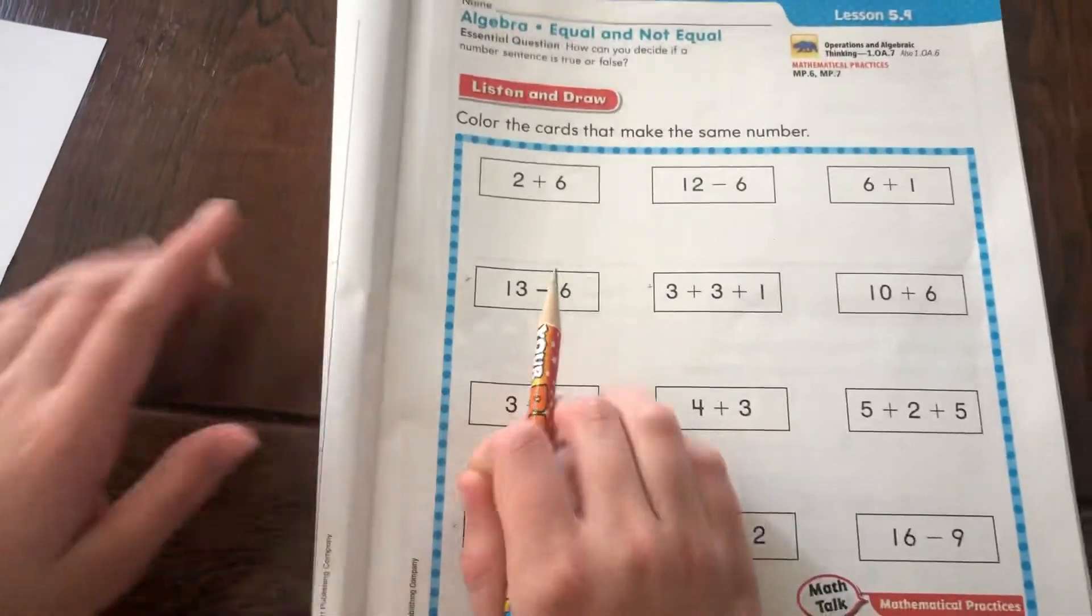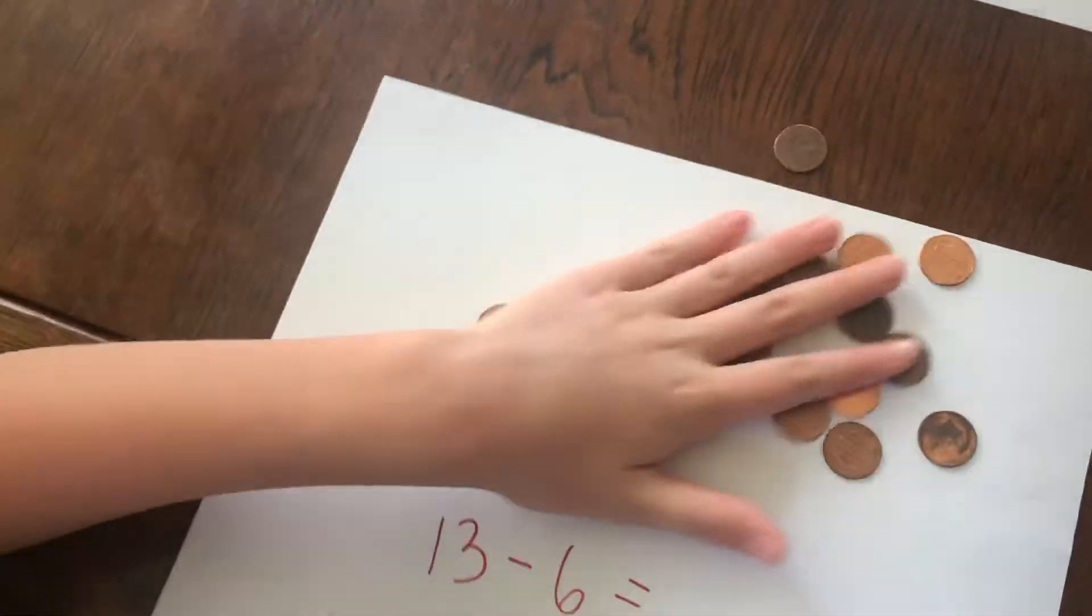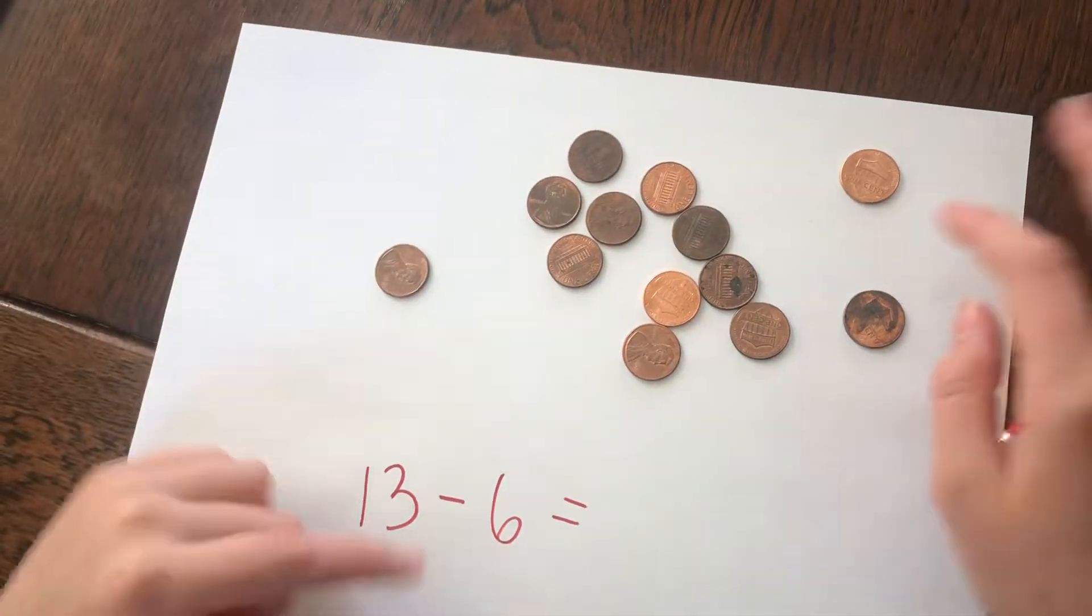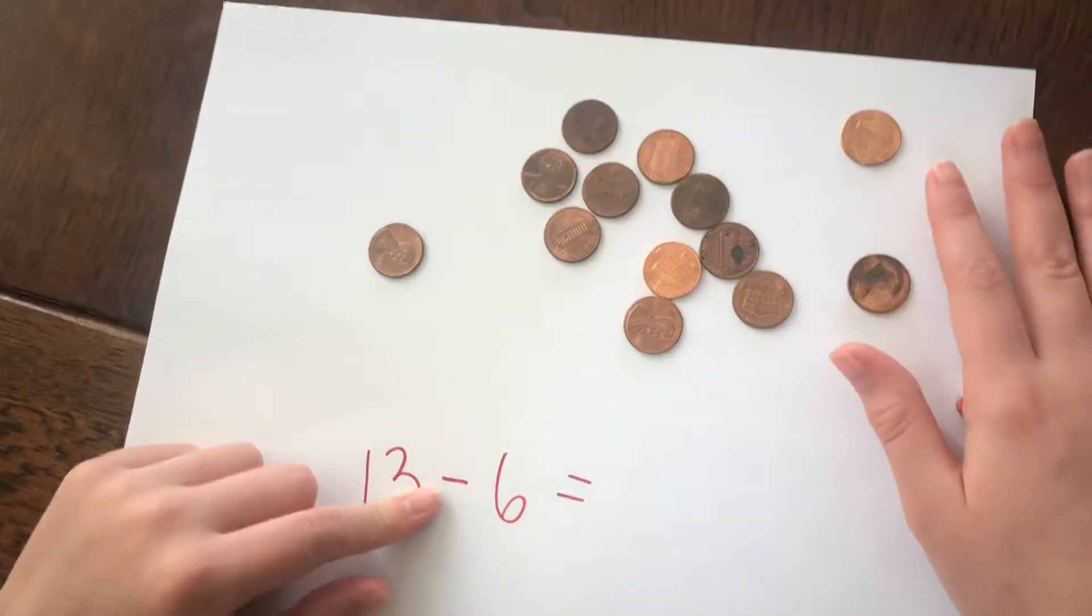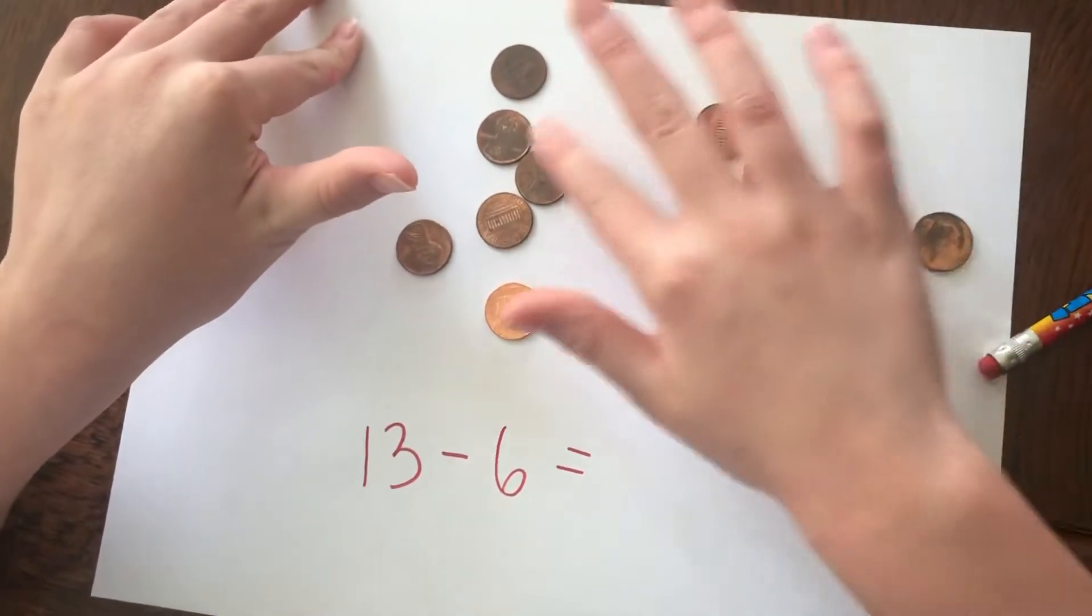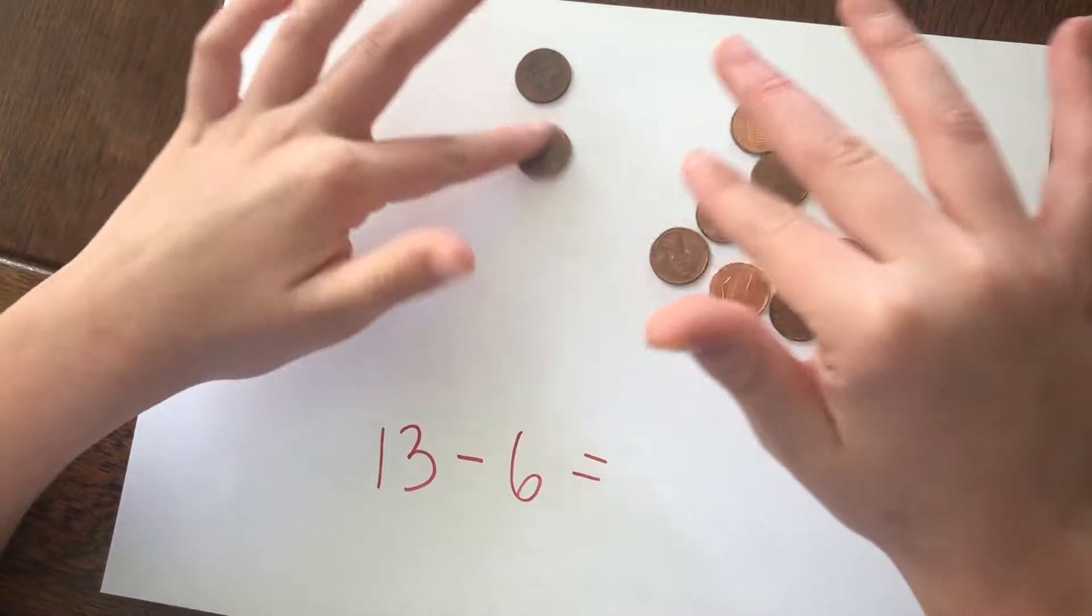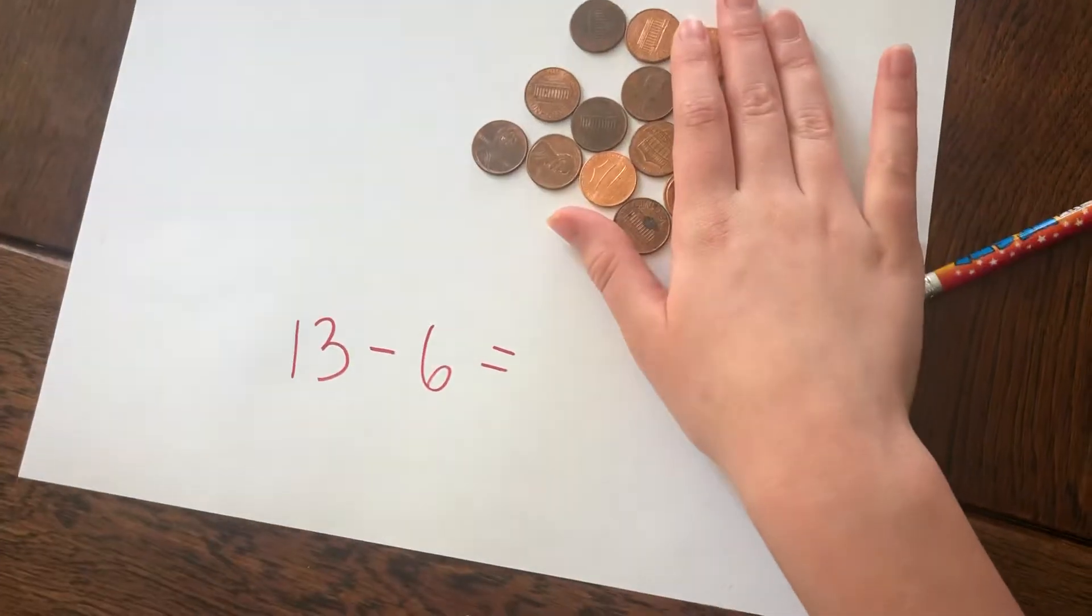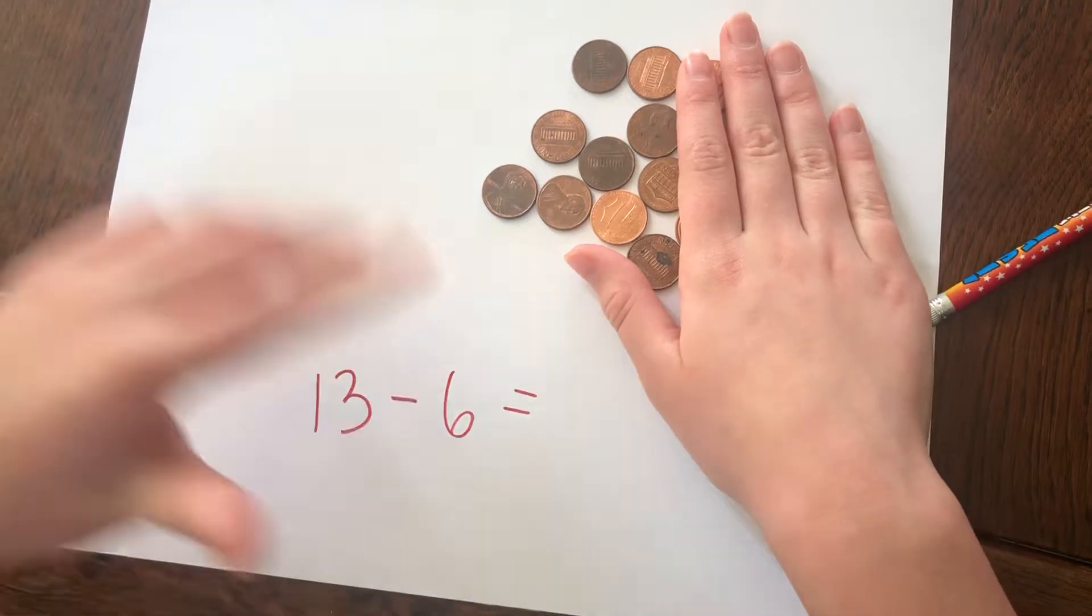It says 13 minus 6, so I'm going to bring over these right here and I have 13 pennies already counted up. So it says minus... let me make sure they're 13. 1, 2, 3, 4, 5, 6, 7, 8, 9, 10, 11, 12, 13. Okay, so I made sure I have 13 and it's a subtraction so that means I need to take away 6.